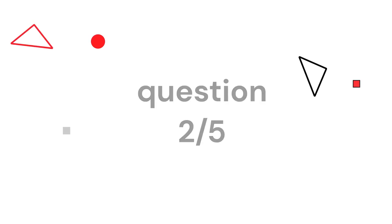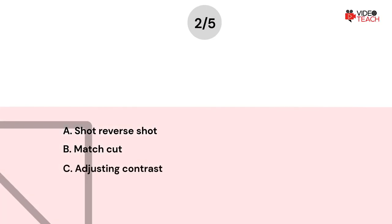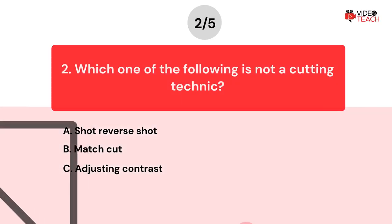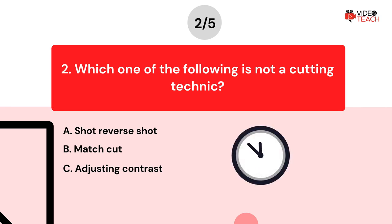Question number two. Which one of the following is not a cutting technique? Option A: Shot reverse shot. Option B: Match cut. Option C: Adjusting contrast. Now you have about 15 seconds to think about your answer.